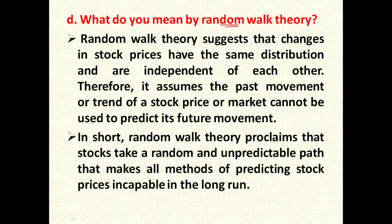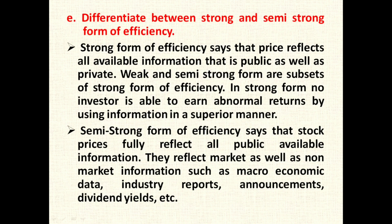The next question: what do you mean by random walk theory? Random walk theory suggests that changes in stock market prices have the same distribution and are independent of each other. Therefore, it is assumed that past movement or trend of a stock price cannot be used to predict its future movement. In short, random walk theory proclaims that stock takes a random and unpredictable path, making all methods of predicting stock prices incapable in the long run.